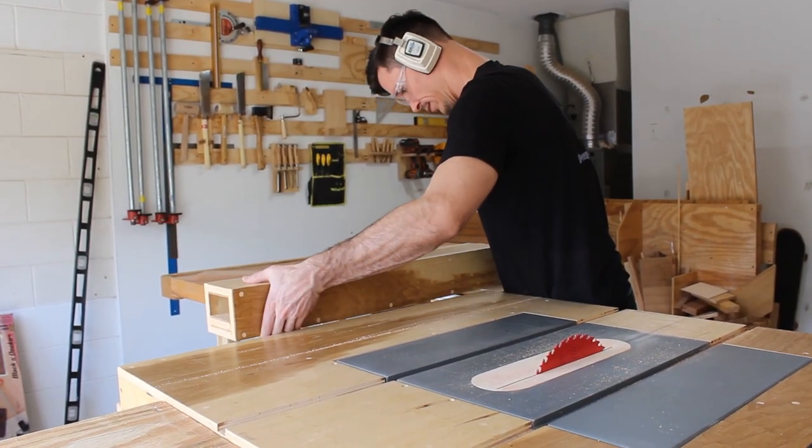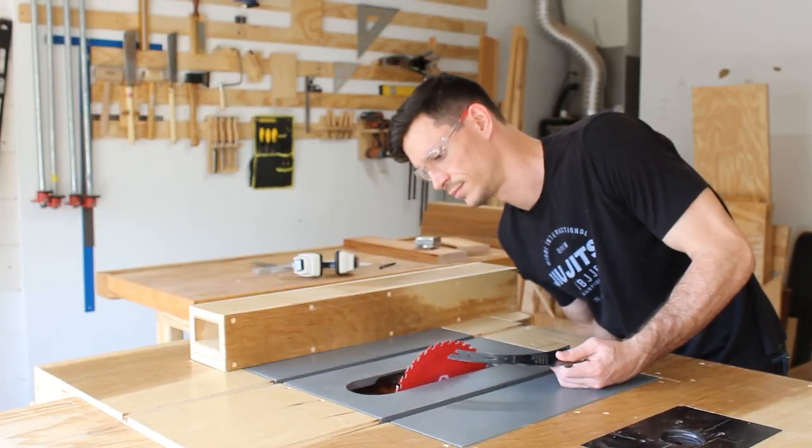Once I completed my crosscut list, I threw the fence back on the table and ripped everything down to width.